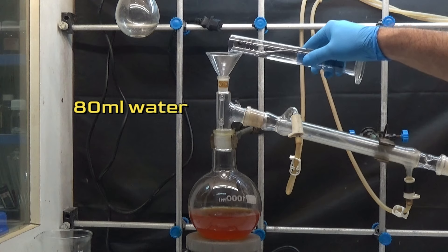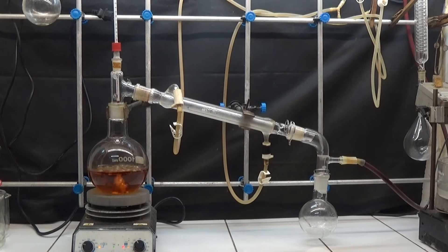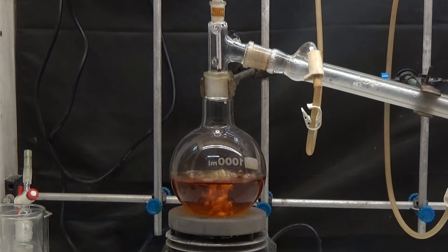After 2 hours of reflux add 80 milliliters of water. We distill under vacuum, maintaining a volume of 500 milliliters in the distillation flask.